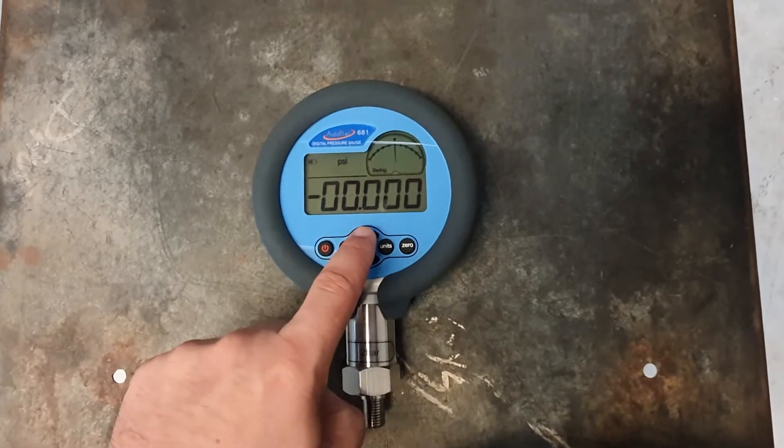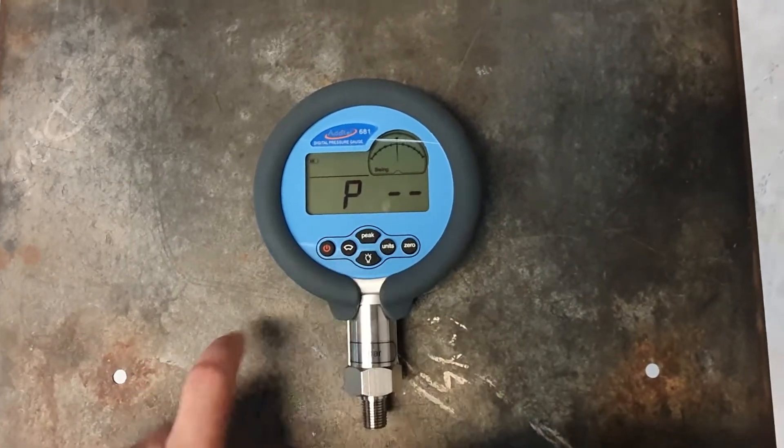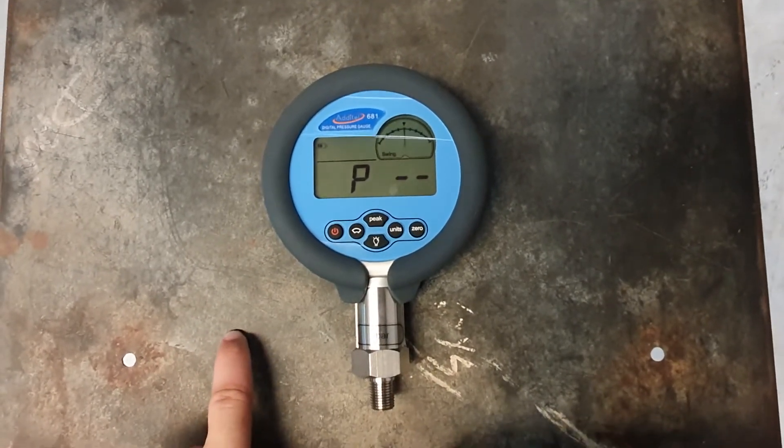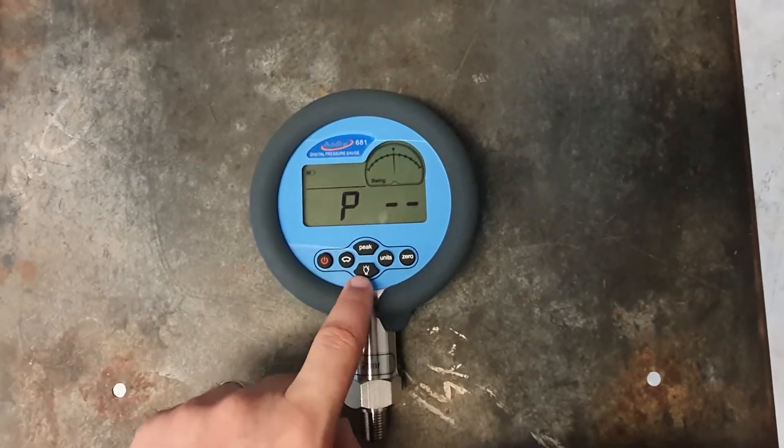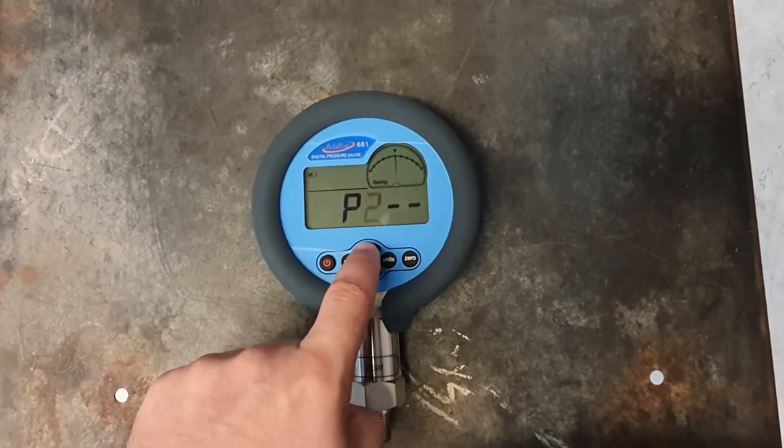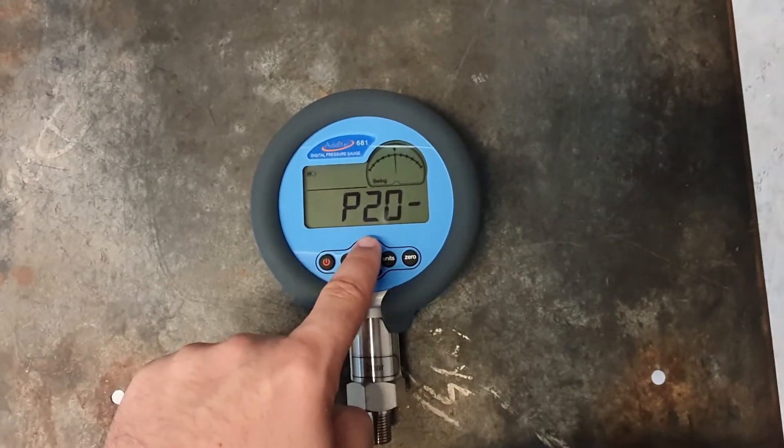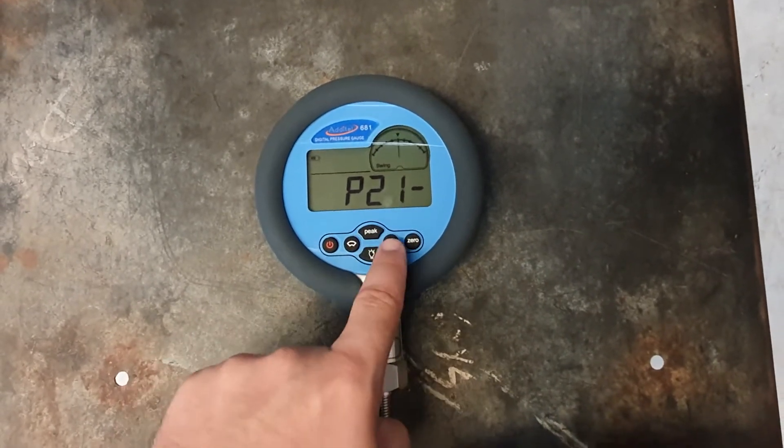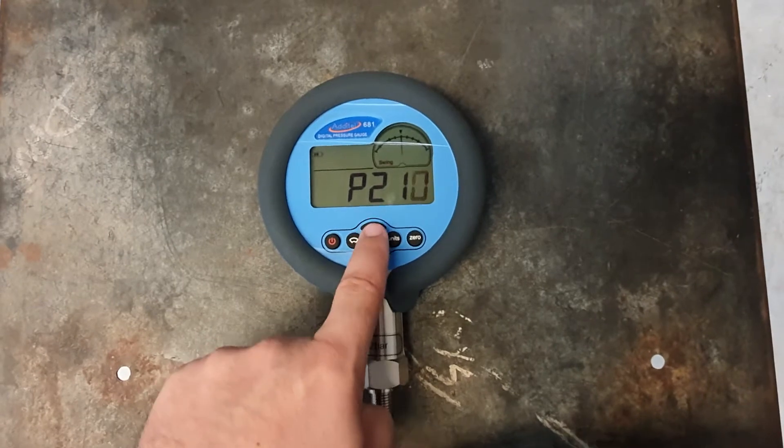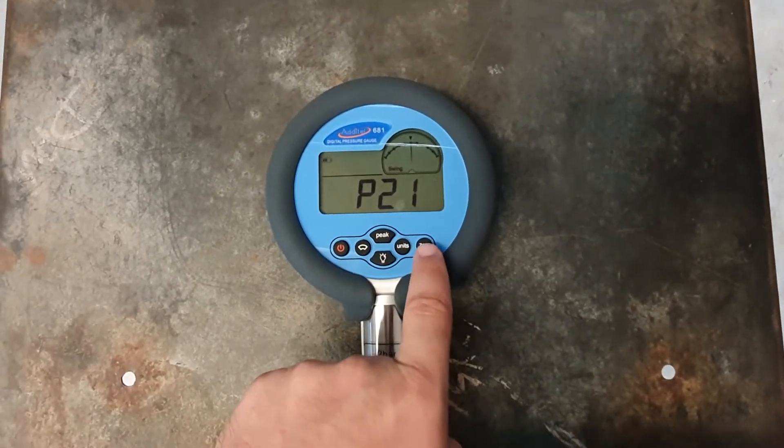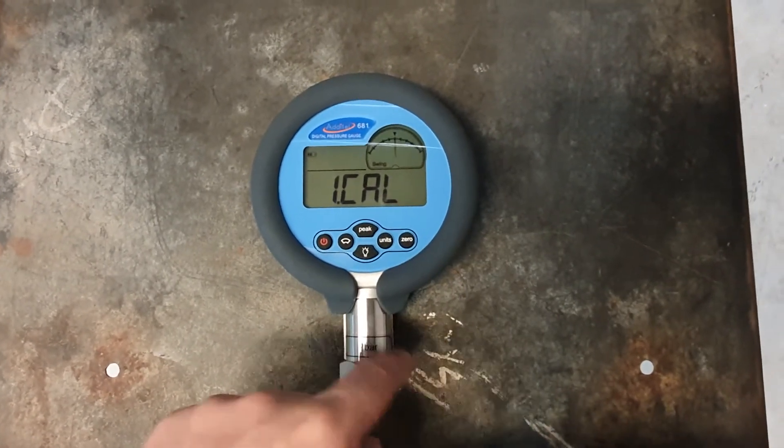So first we begin by holding the peak button, a prompt for a password, and we need to enter the password 211. So we press up to get to 2, units goes over, up to get to 1, and units goes over, and 1 again, and then press the 0 to confirm.